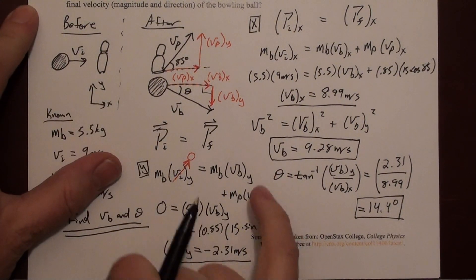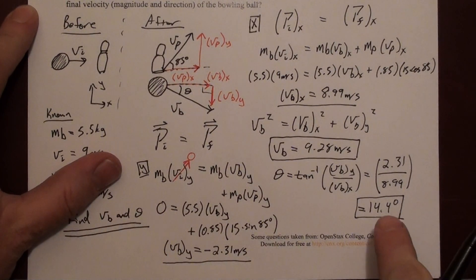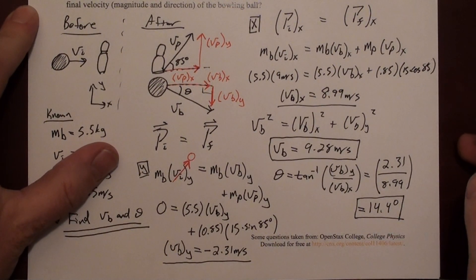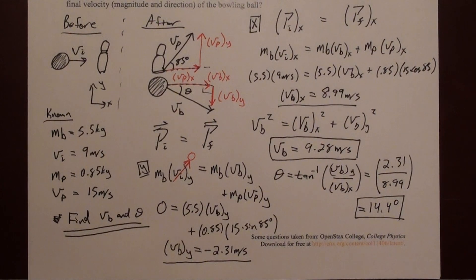When you do this math, you get that theta equals 14.4 degrees, and now we've completely described what happens to the bowling ball after this collision. We have the speed and the direction.